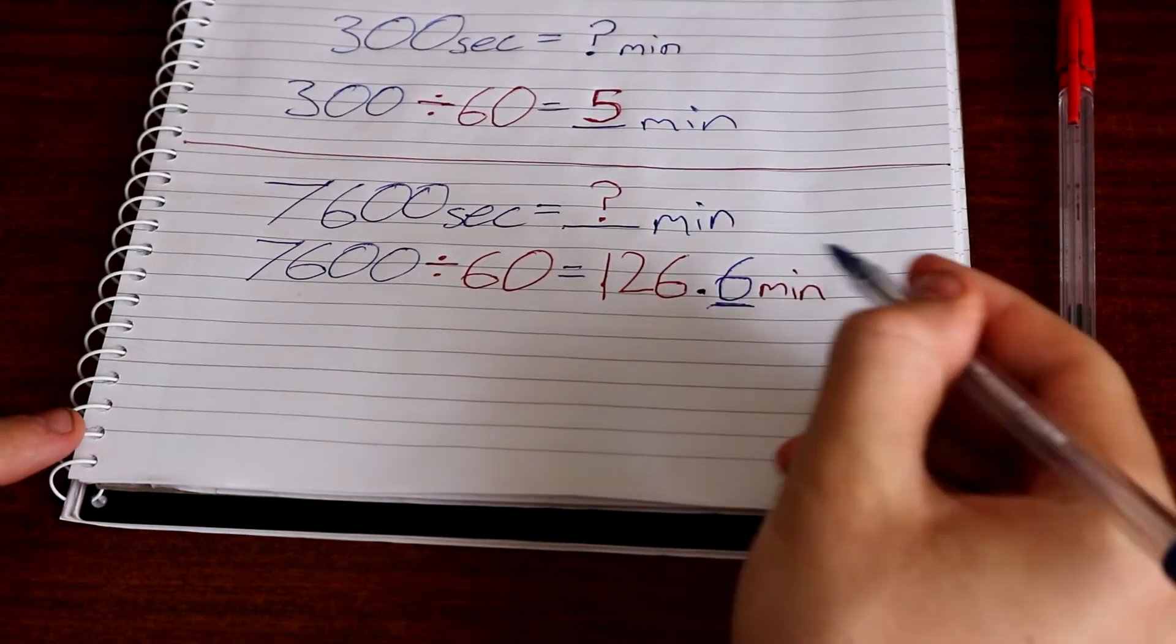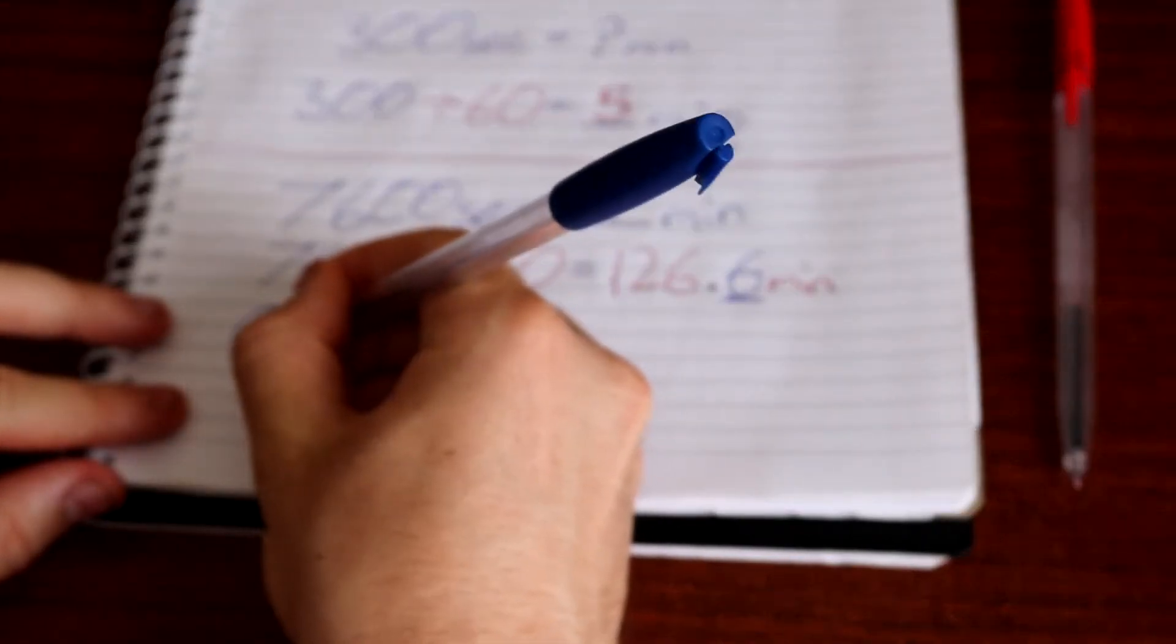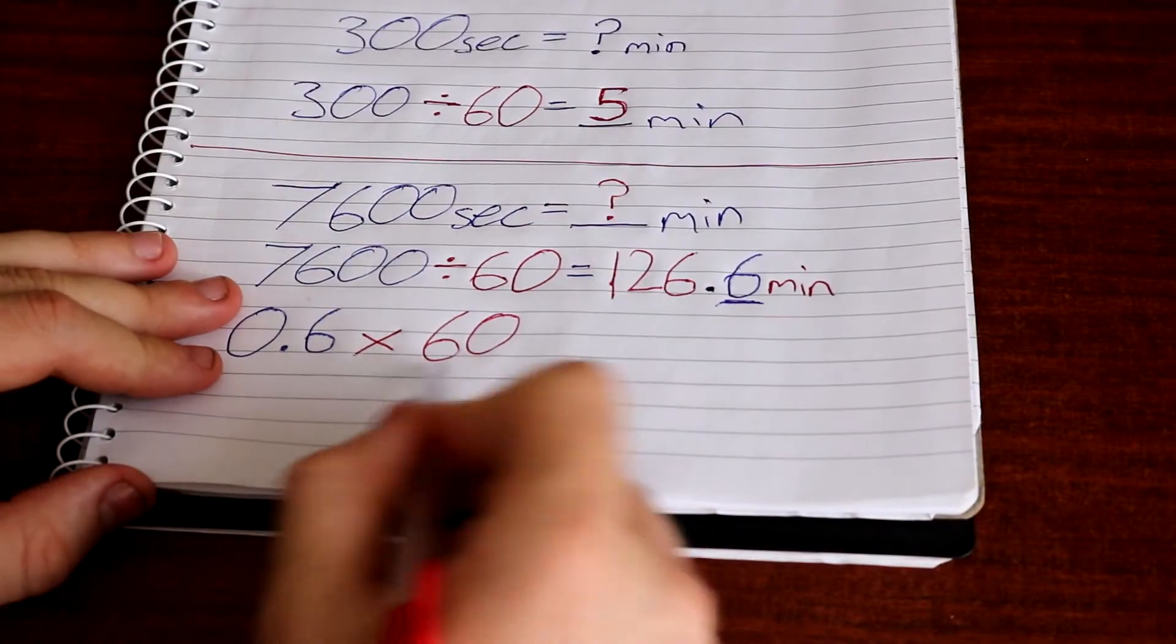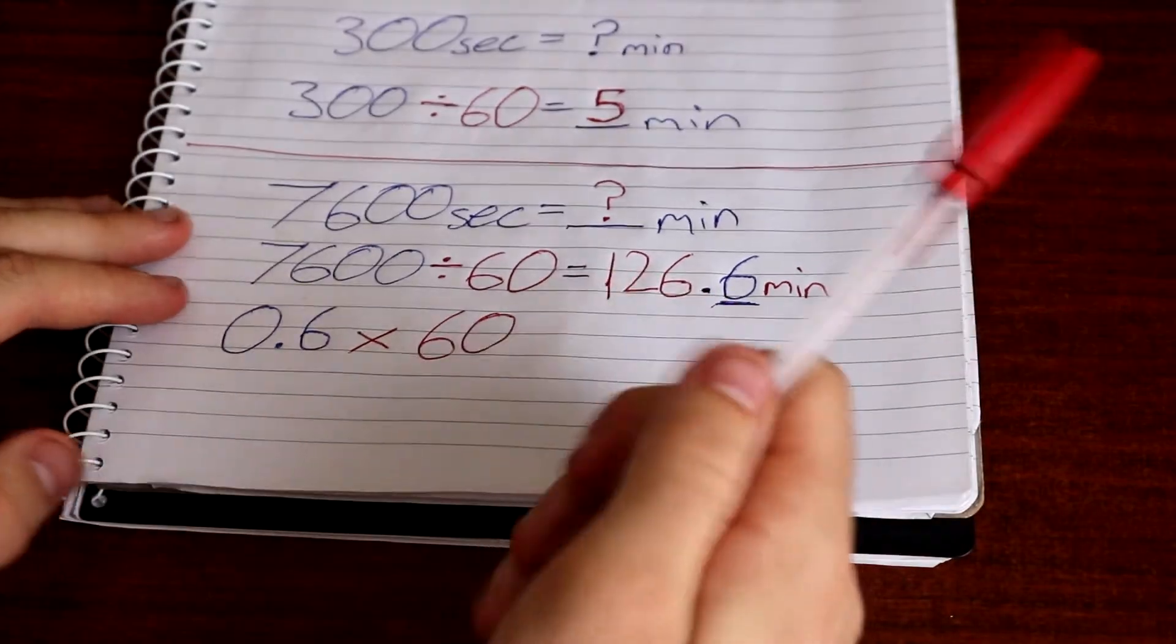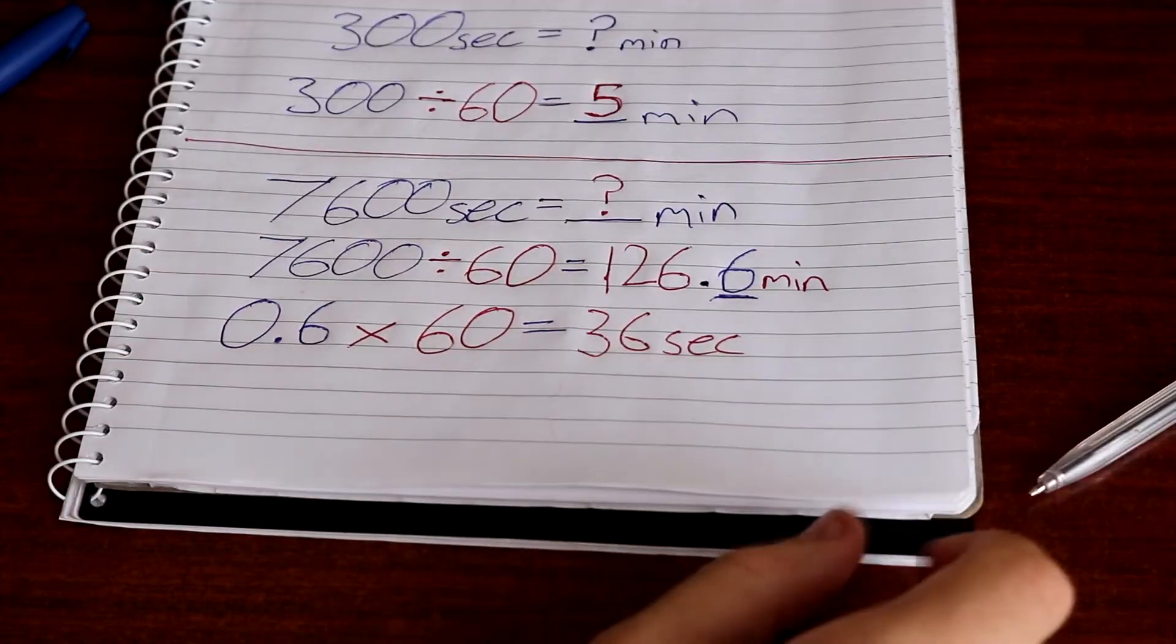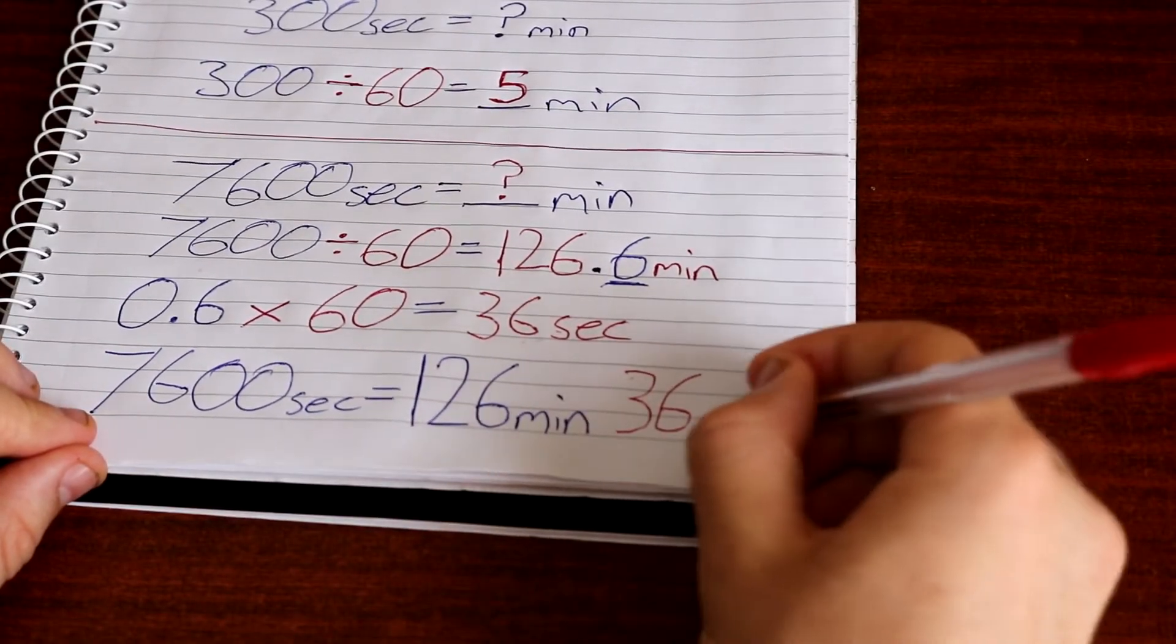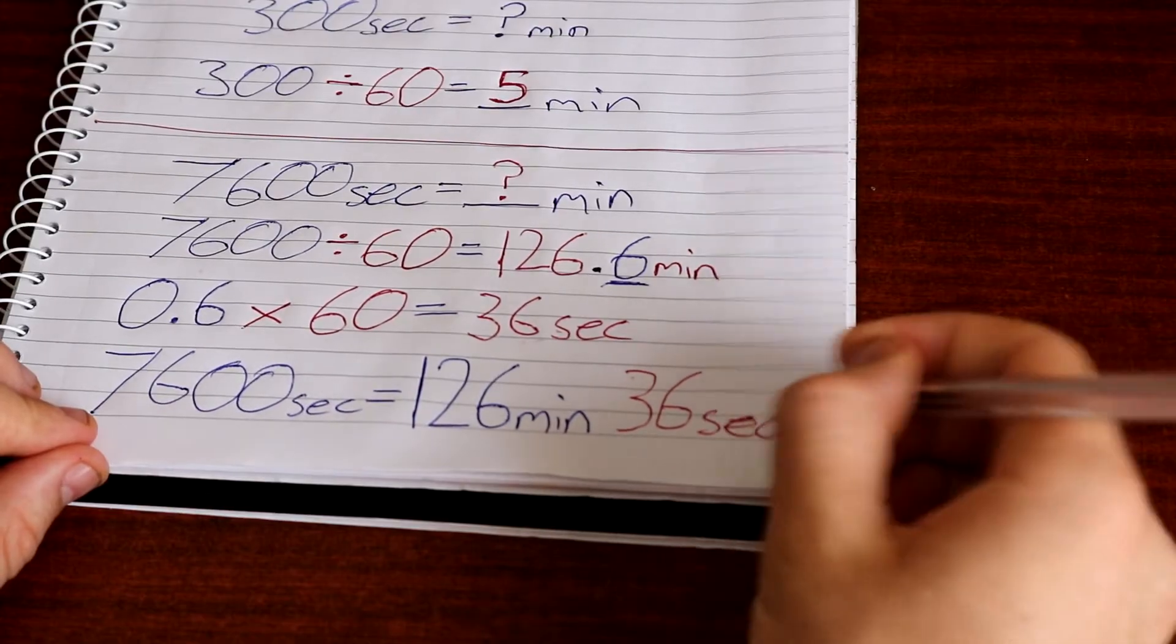To find that decimal point, you need to times that decimal point by 60 because there's 60 seconds in a minute. In my case it would be 0.6 times 60—if you put it into a calculator, it equals 36 seconds. So 7,600 seconds ends up equaling 126 minutes and 36 seconds.